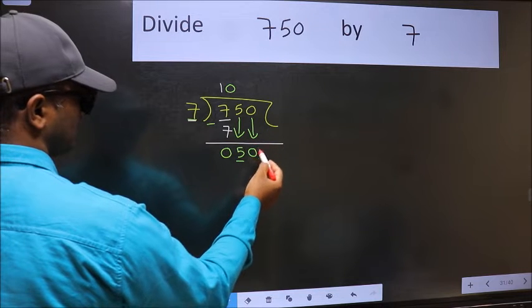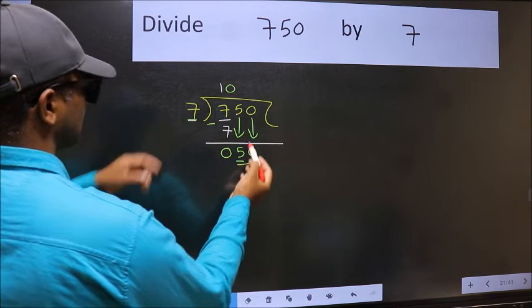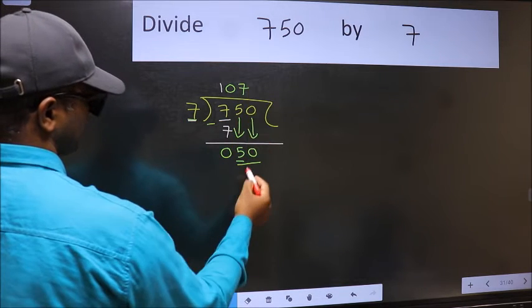Now we have 50. A number close to 50 in the seven table is seven sevens, which is 49.